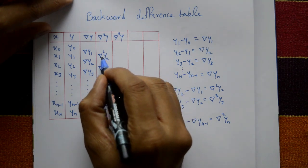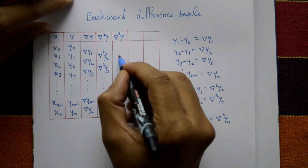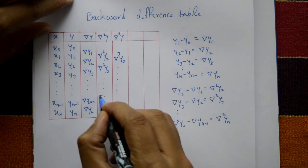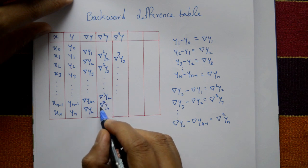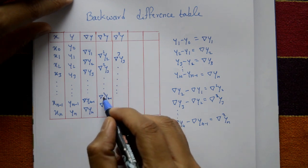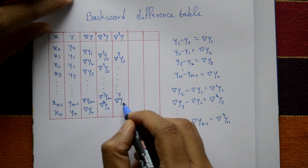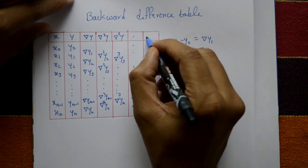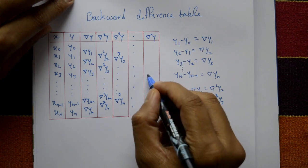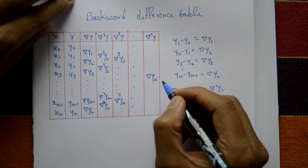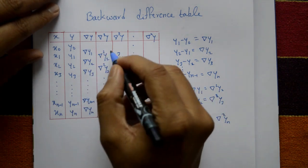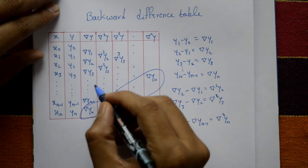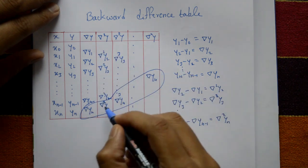The third backward difference: second backward difference y3 minus second backward difference y2 is the third backward difference y3, and so on. Second backward difference yn minus second backward difference yn-1 is the third backward difference yn. This continues up to the nth backward difference yn. The last values in every column are called the leading backward differences.